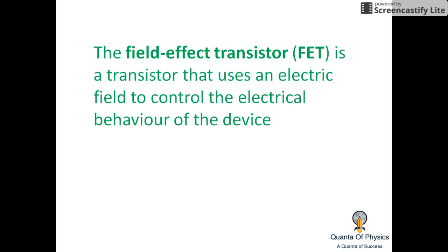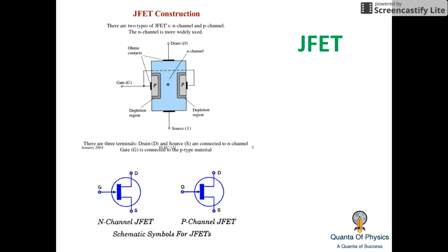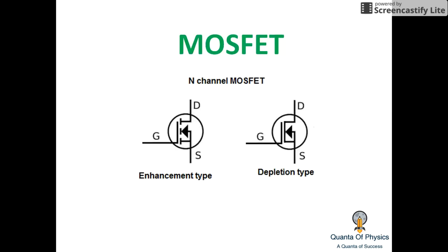The set of 30 questions covers the topic of Field Effect Transistors. A FET is a transistor that uses an electric field to control the electrical behavior of a device, meaning FET is a voltage control device. We have two types of FET: JFET (Junction Field Effect Transistor) and MOSFET (Metal Oxide Field Effect Transistor). This covers the construction of JFET, N-channel and P-channel symbols, and the symbols for E-MOSFET and D-MOSFET.